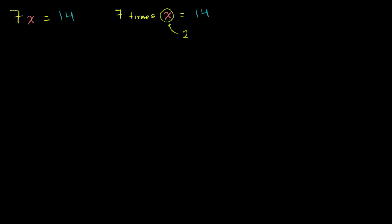This literally just says 7 times x is equal to 14. In algebra, we don't write the times sign. When you write two numbers next to each other, or a number next to a variable like this, it just means you are multiplying — it's just a shorthand notation. We don't use the multiplication sign because x is the most common variable used in algebra, and if I write my times sign or my x a little bit strangely, it might look like xx or times times.